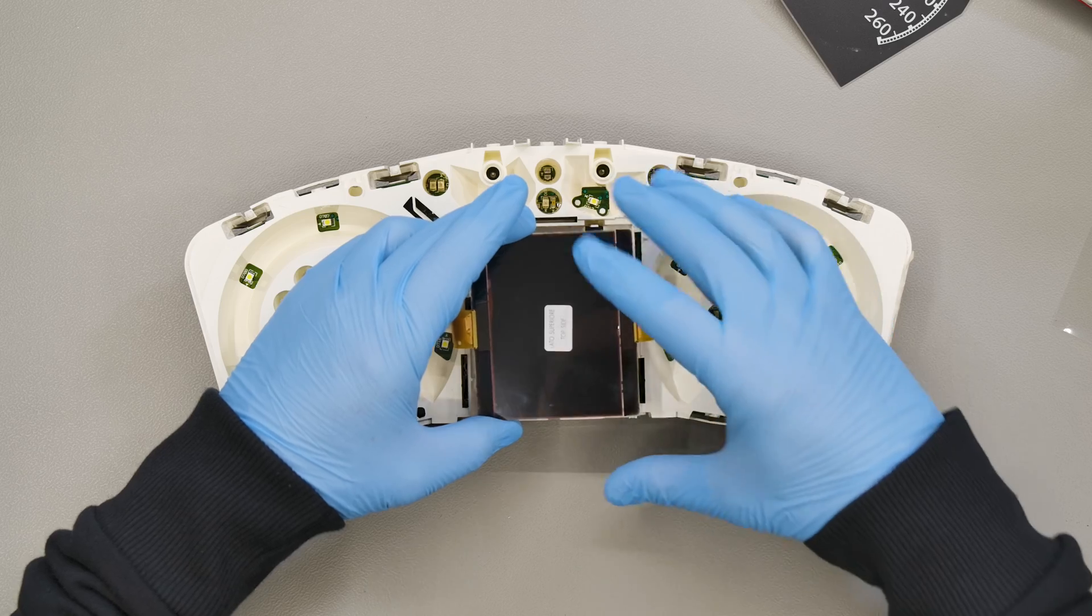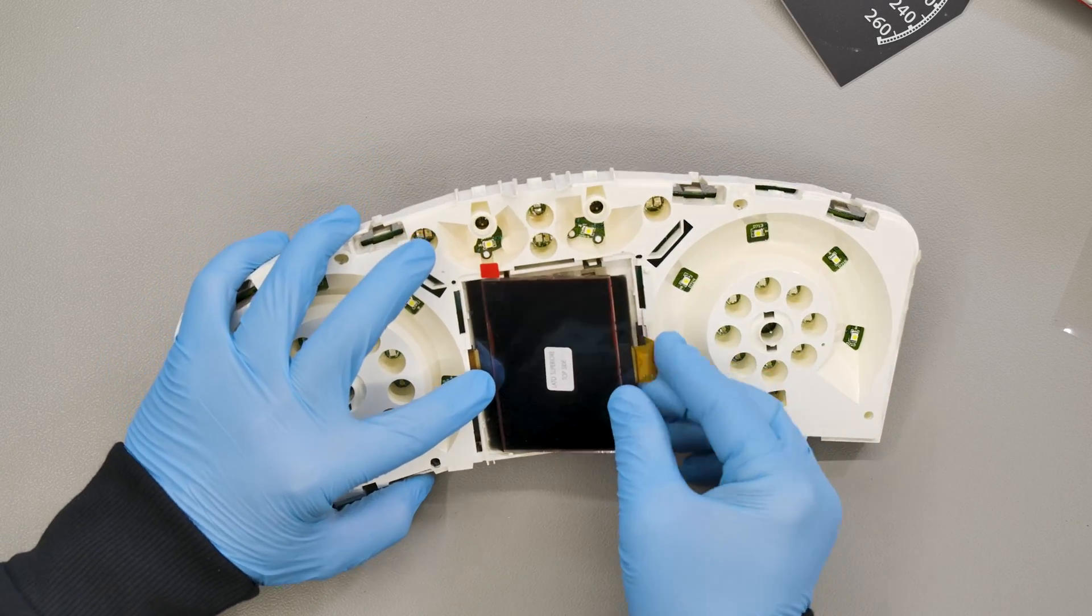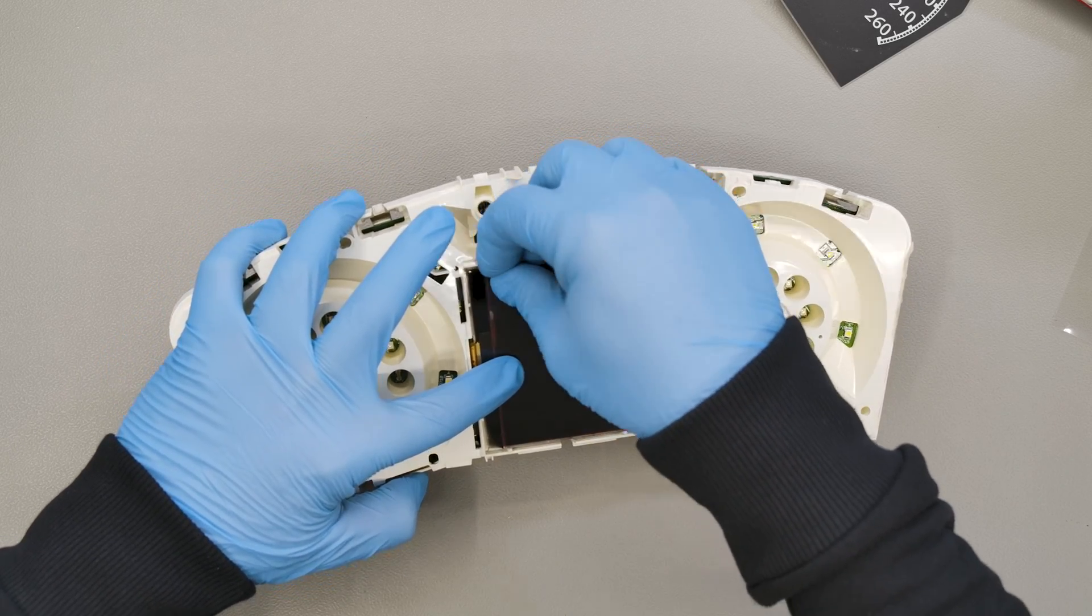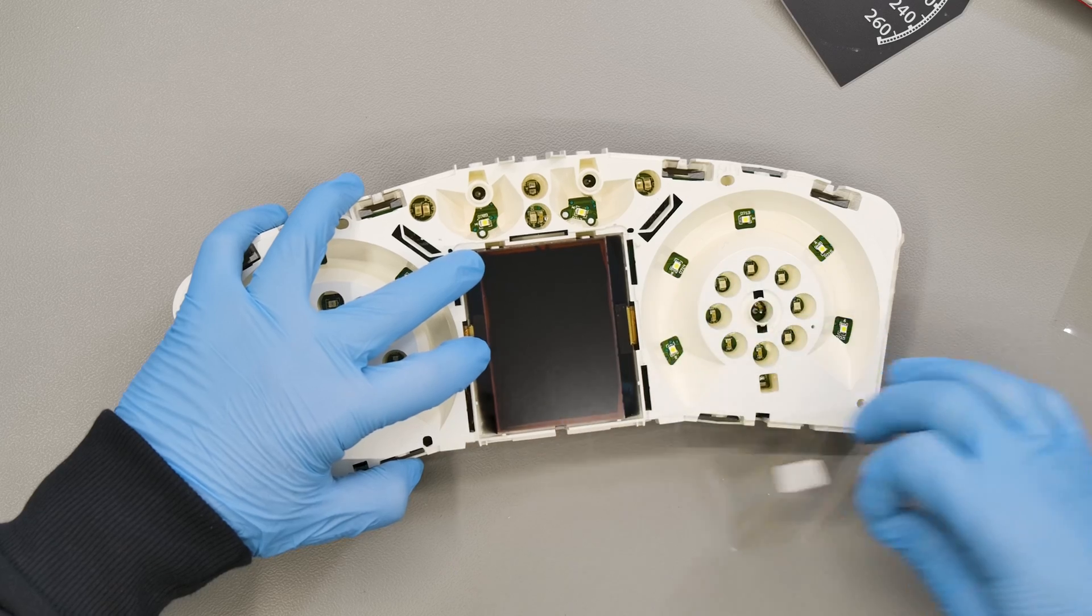Fit both flats into the slots. Position the display on the board and remove the clear film on the front as well.